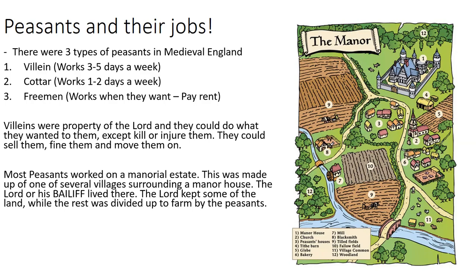Although the lord kept some of the land, the rest was divided up to be farmed by the peasants. This land — numbers five and nine on the diagram — was split up and the peasants would farm it. This looks like the land is really close together, but when we look at it later, the land is actually quite far apart.